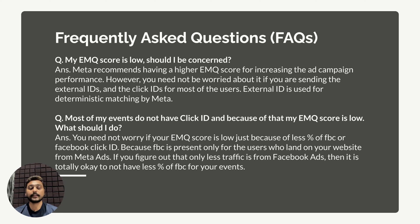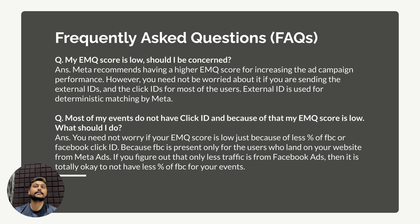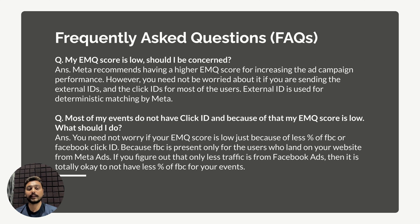Second question: most of my events don't have a click ID, so my EMQ score is low — what should I do? You shouldn't necessarily worry, but you should analyze why. The FBC or click ID is only generated for users who land on your website from Meta ads. If your major traffic source is organic or something other than Meta ads, you obviously won't have a click ID. Without a click ID, there's nothing to send to Meta. Not having a click ID for all events doesn't mean your ad campaign performance will be low — analyze the rationale behind it.